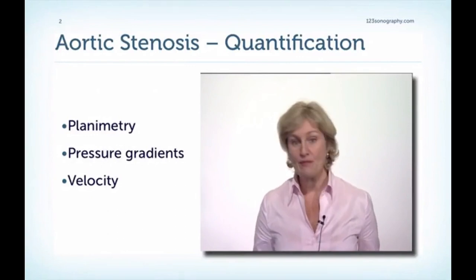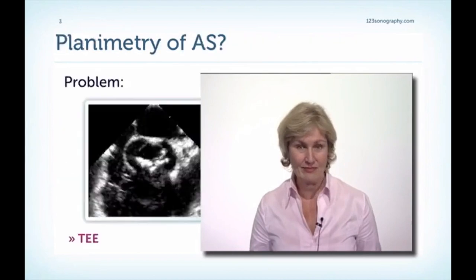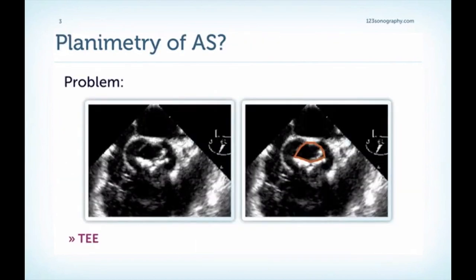Welcome back. We will look at the quantification of aortic stenosis. The most important tools are planimetry, the pressure gradients, and the assessment of the AV velocity. It would be great if we could directly measure the aortic valve area, however very often it's difficult to visualize the actual orifice of the aortic valve because the valve is heavily calcified, for example, and there can be a lot of shadowing and artifacts.